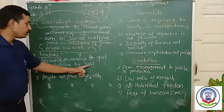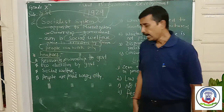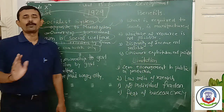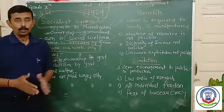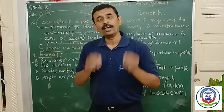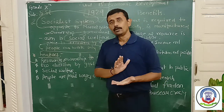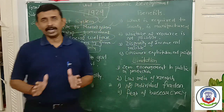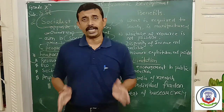Second, economic decisions are taken by the government only. As the government is the owner of all resources and all industries, all economic decisions are taken by government only — people cannot interfere. What to produce, how to produce, which thing to produce, which factors of production to use — everything is decided by government. The government starts and establishes industries as per the need of the society and the people.